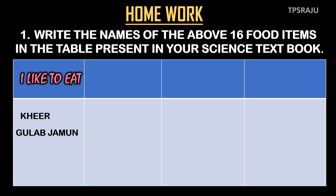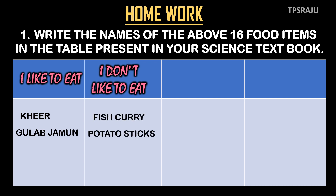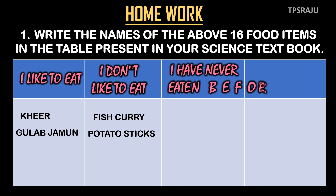In second column, I don't like to eat — that means, which food item you don't like to eat? Write their names in the second column. For example, I don't like fish curry and potato sticks, so I am writing fish curry and potato sticks. In third column, I have never eaten before. For example, I have never eaten kiwi fruit, so I am writing kiwi fruit in the third column.